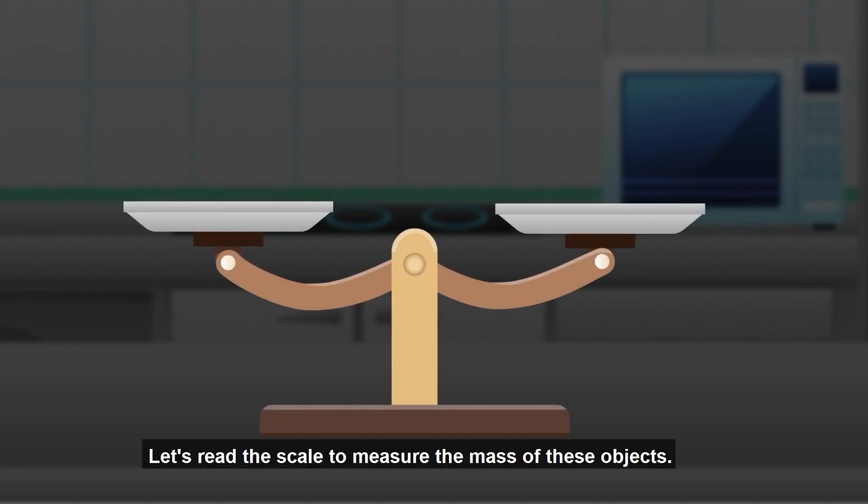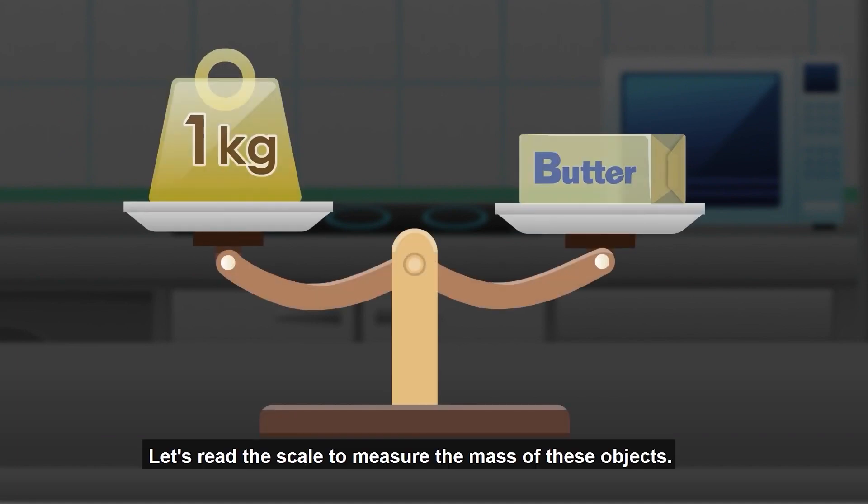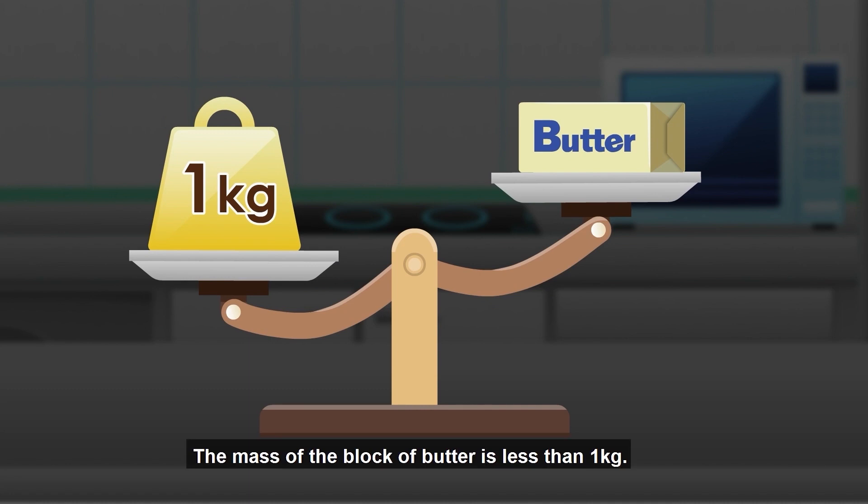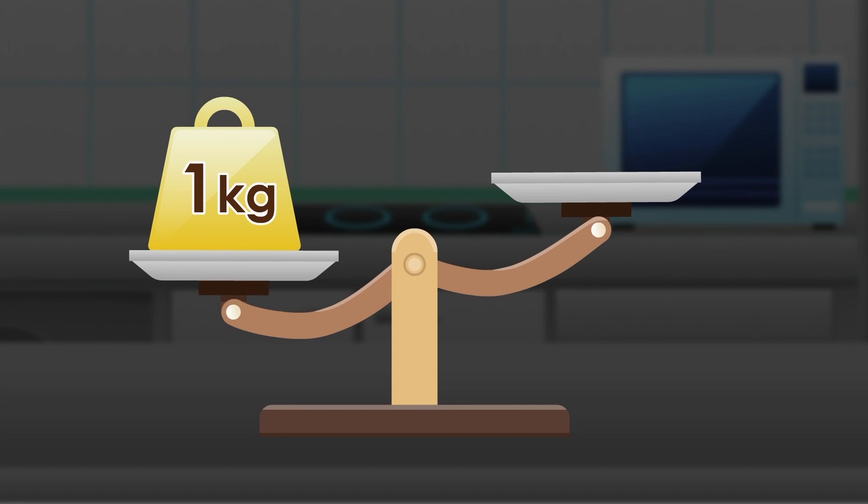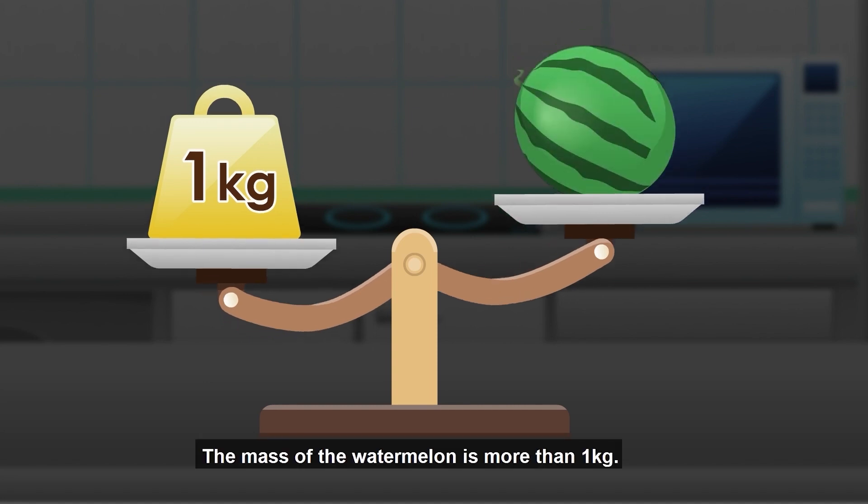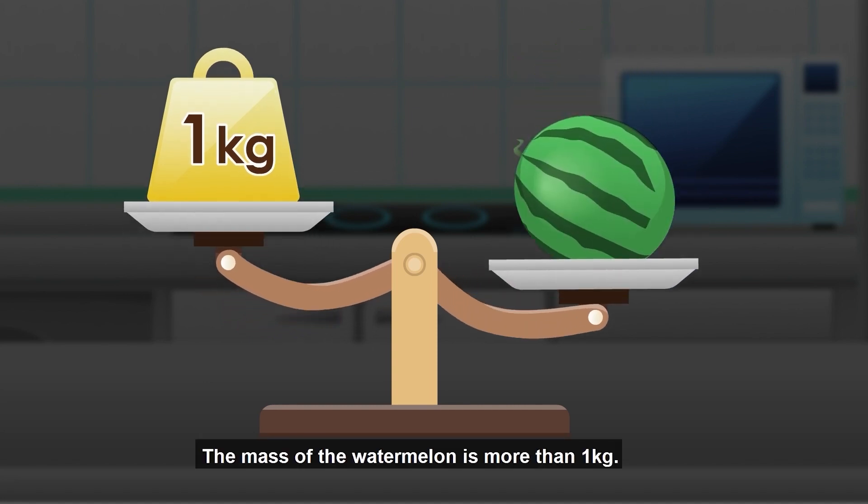Let's read the scale to measure the mass of these objects. The mass of the block of butter is less than 1 kilogram. The mass of the watermelon is more than 1 kilogram.